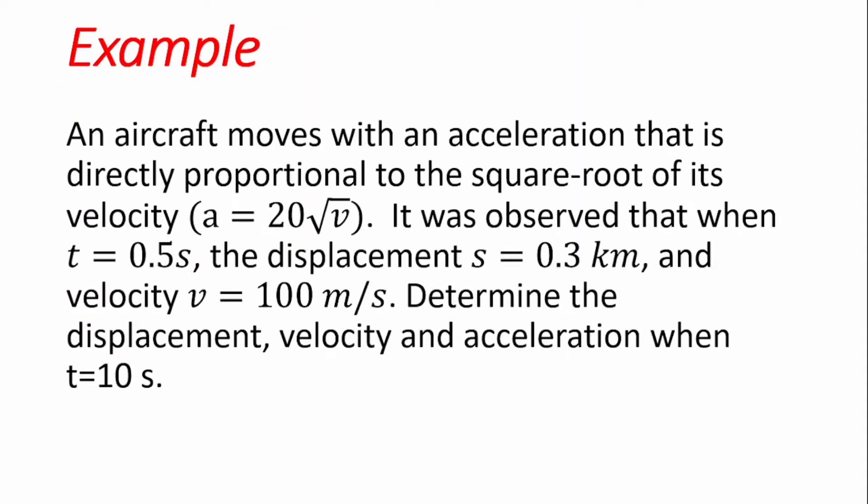We're going to walk through this problem of an aircraft which moves with an acceleration that is directly proportional to the square root of its velocity — that is, a is equal to 20 root v. It was observed that when t is equal to 0.5 seconds, the displacement is 0.3 kilometers and velocity is 100 meters per second.